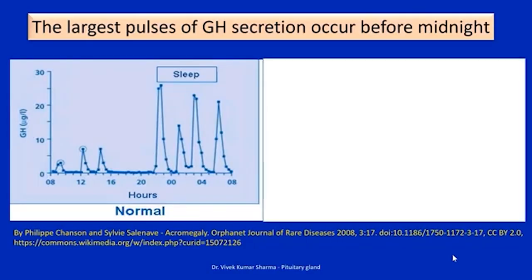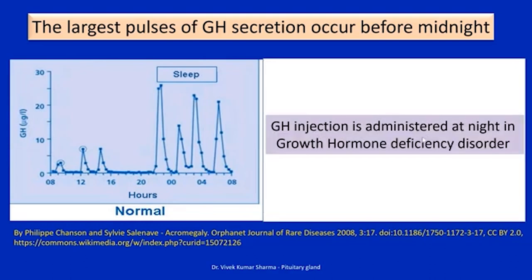Growth hormone secretion is intimately related to sleep architecture. The largest pulses of growth hormone secretion occur before midnight. Most of the secretion occurs during night hours only. This is the reason that growth hormone injection is administered at night whenever there is a growth hormone deficiency disorder.